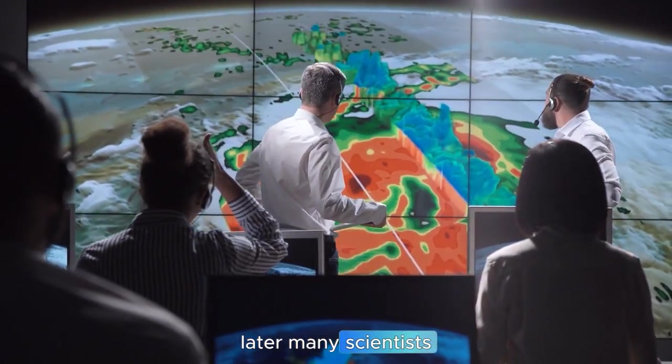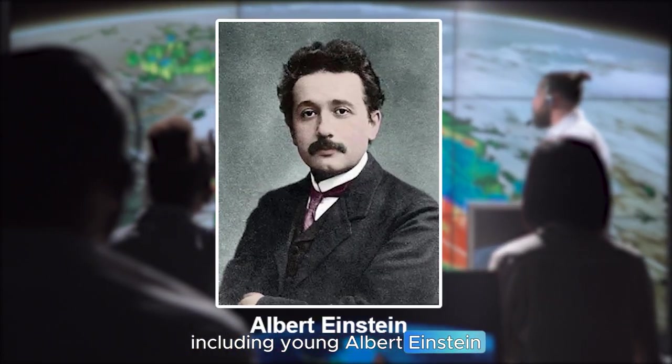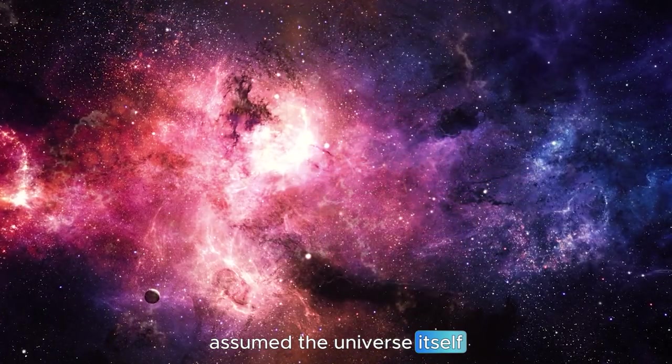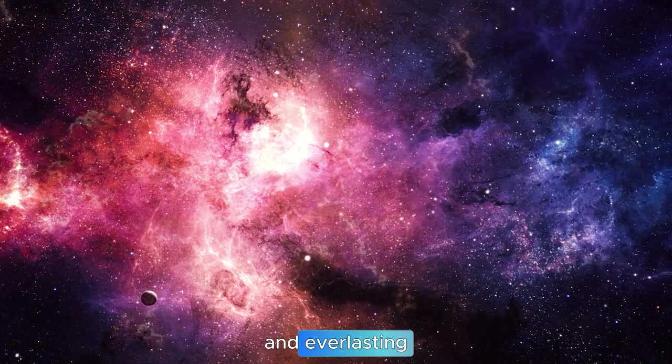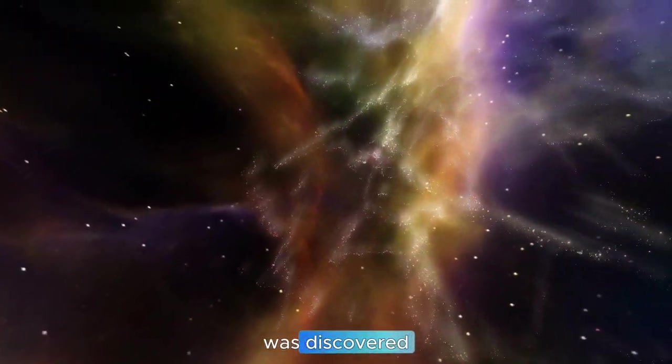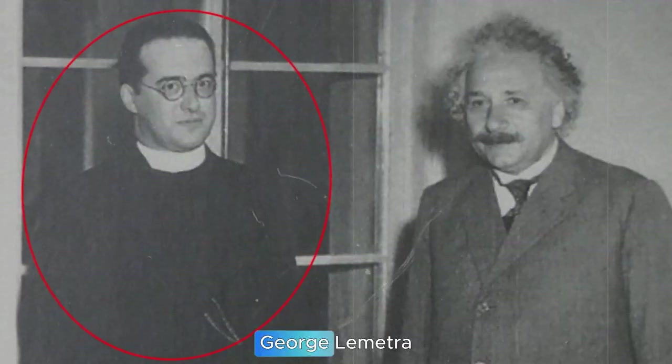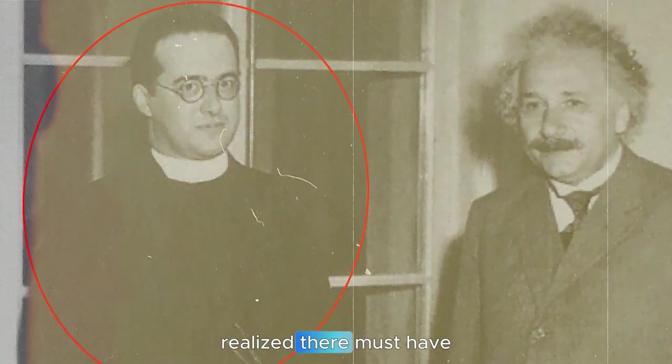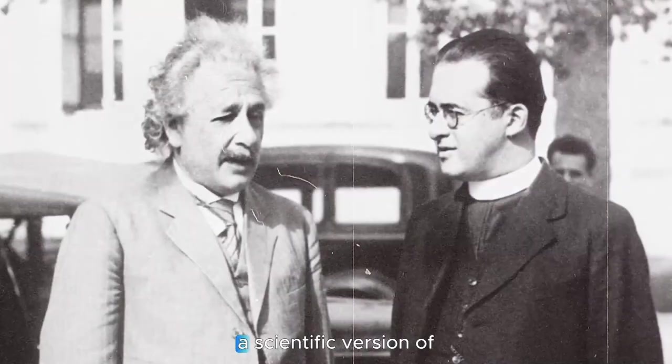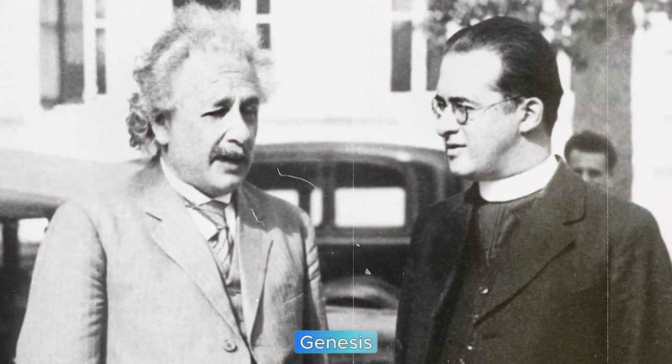Later, many scientists, including young Albert Einstein, assumed the universe itself to be eternal and everlasting. But when cosmic expansion was discovered, a Belgian cosmologist and Jesuit priest, Georges Lemaitre, realized there must have been a beginning, a scientific version of Genesis, so to speak.